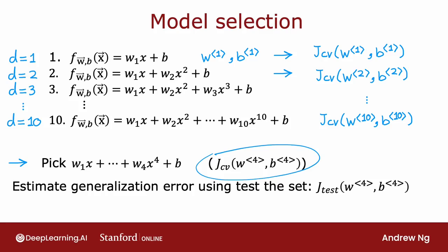Finally, if you want to report an estimate of the generalization error—how well this model will do on new data—you would do so using the test set and report J test of w4, b4.